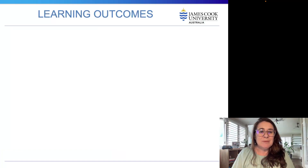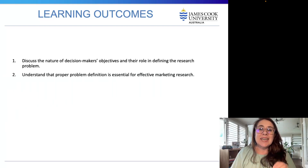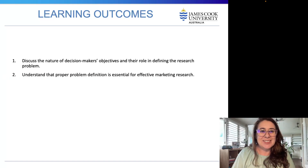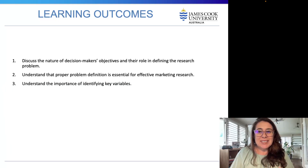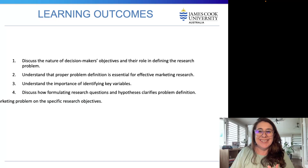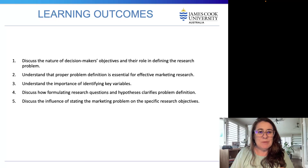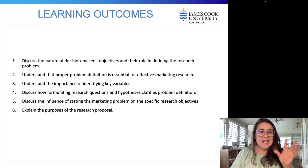The learning outcomes for this topic are: to discuss the nature of decision makers' objectives and their role in defining the research problem; to understand that proper problem definition is essential in effective marketing research; to understand the importance of identifying key variables; to discuss how formulating research questions and hypotheses clarifies problem definition; to discuss the influence of stating the marketing problem on specific research objectives; and to explain the purposes of the research proposal.